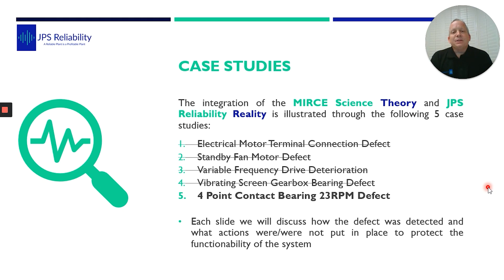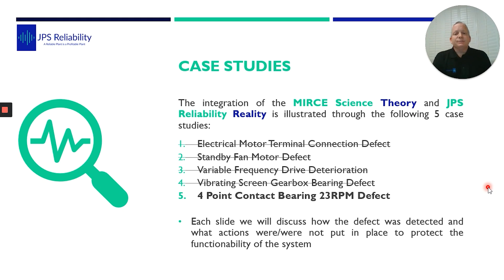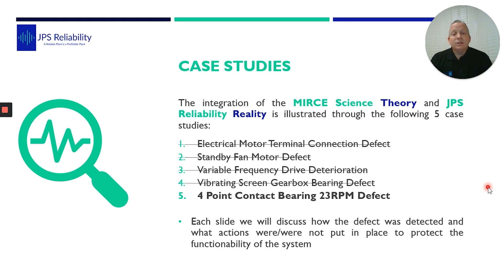Case study four was a vibrating screen gearbox — another great case study showing that if you use correct sampling and correct techniques, you can measure an inner race defect even in the harsh environments of a shaking screen. Today's case study is number five, on a four-point contact bearing rotating at 23 rpm, where the failure was detected before the functionality of the system was affected. These case studies are all featured in my book, Enhancing Reliability Through Vibration Technology.